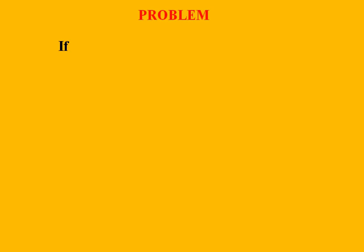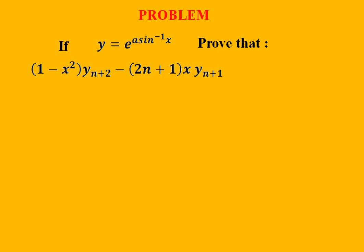The question is: if y is equal to e^(a·sin⁻¹x), then prove that (1 - x²)·y_{n+2} - (2n+1)x·y_{n+1} - (n² + a²)·y_n is equal to 0.